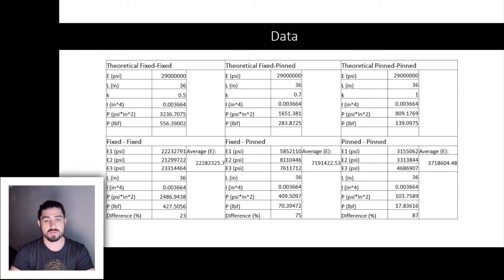Experimentally, the critical loads for the specimens were 428 force pounds for the specimens fixed at both ends, 70 force pounds for the specimens that had one end fixed and one end pinned, and 18 force pounds for the specimens that were pinned at both ends.